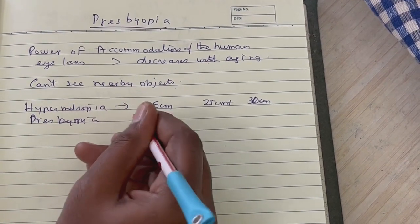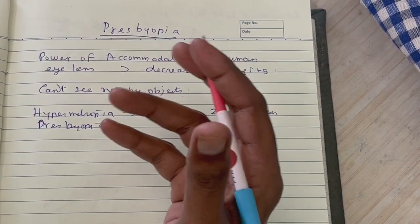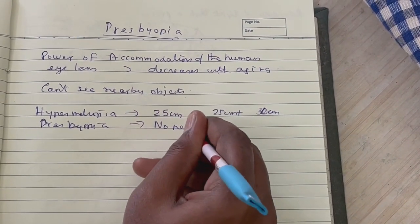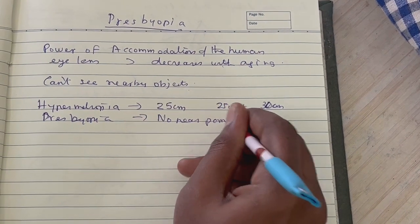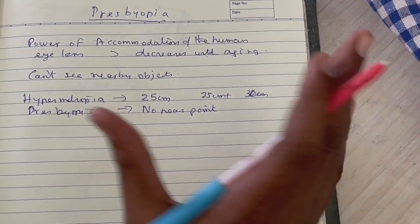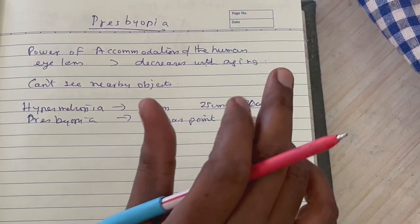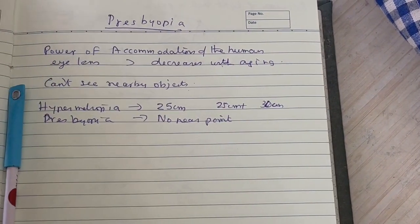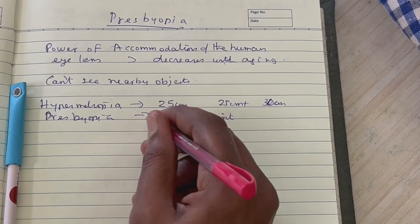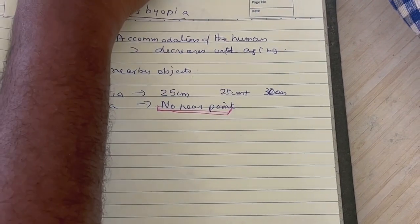Now the point that because the accommodating power of the lens is going away, it's receding, it simply means that there is no near point. It's not that 25 centimeters becomes something more than that. The key point here is that the difference between hypermetropia and presbyopia is that as far as presbyopia is concerned, there is no near point. That point is very important.